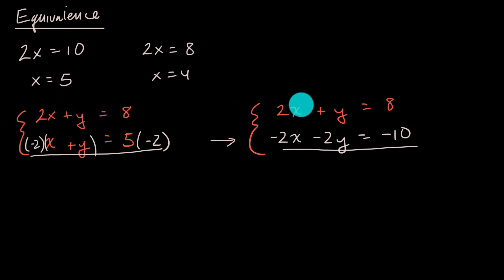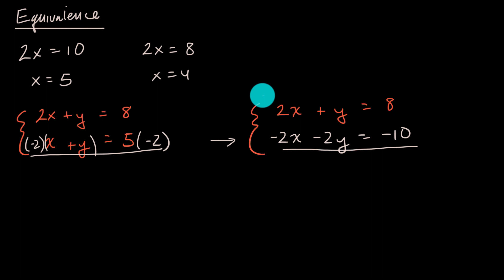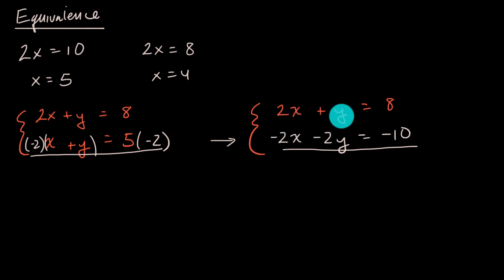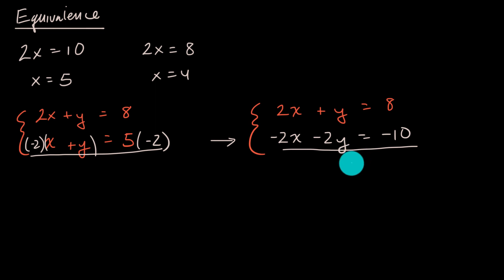Any x, y pair that satisfies one of these systems is going to satisfy the other and vice versa. Now, if you were trying to solve this using elimination, you'd say: if I can add the left sides and the right sides together, the x's will cancel out and I'll just be left with y's. We've done this before — you can think of it as solving for y.